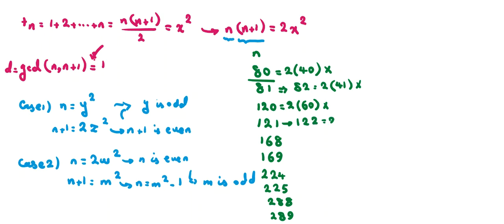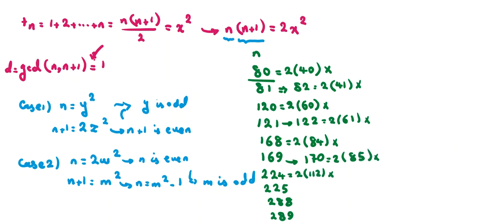Continuing: n = 168 gives 2×84, not a perfect square. n+1 = 169 gives 170 = 2×85, not valid. n = 224 gives 2×112, not valid. n+1 = 225 gives 226 = 2×113, not valid. But n = 288: 288 = 2×144 = 2×12², which works! So the fourth solution has n = 288.